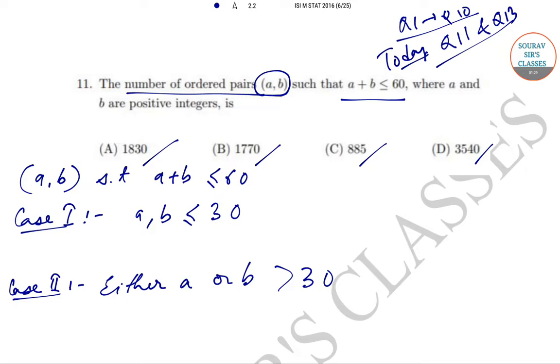So in the first case, the total number of possible combinations will be from 30 numbers we are choosing two numbers, so it will be 30C2, and the numbers can rearrange among themselves in the ordered pair (a,b) in two ways. So 2 times 30C2 plus 30, and that is equal to 900.